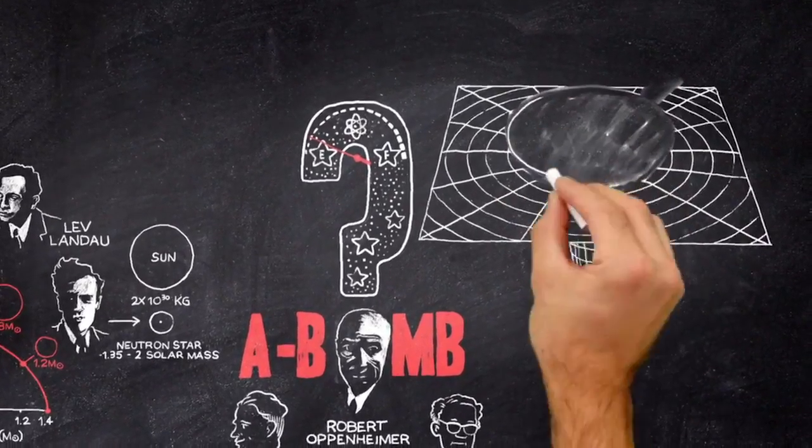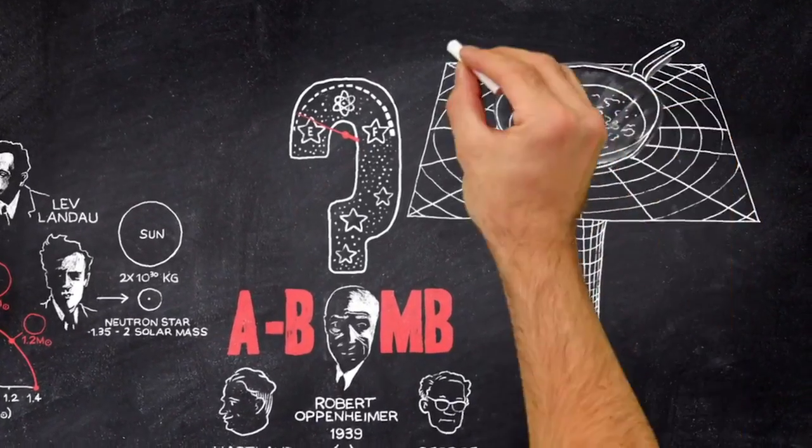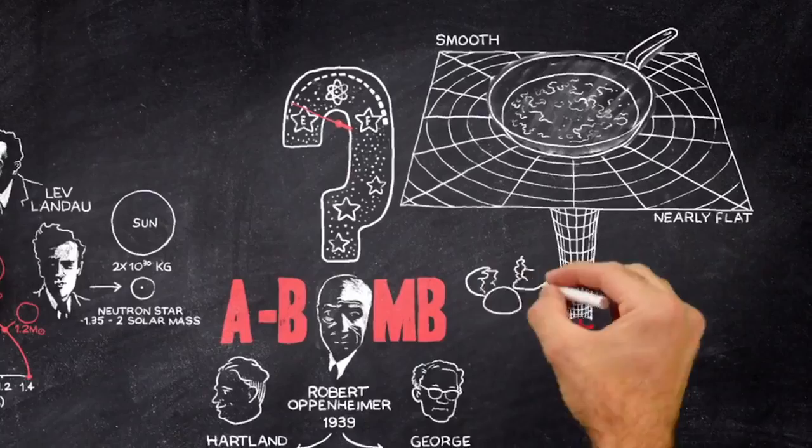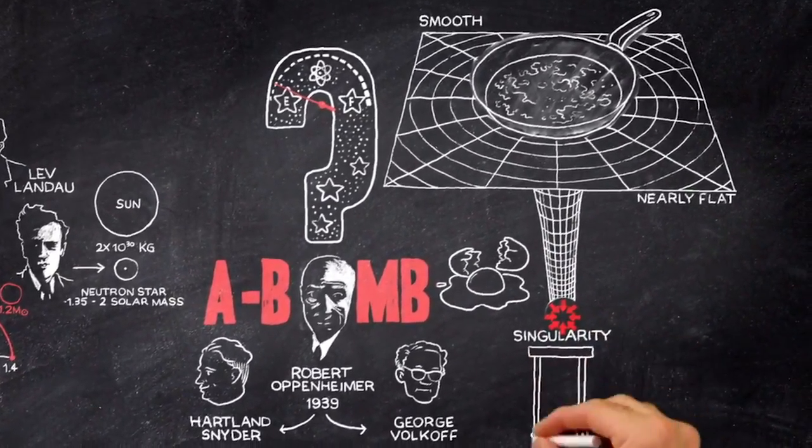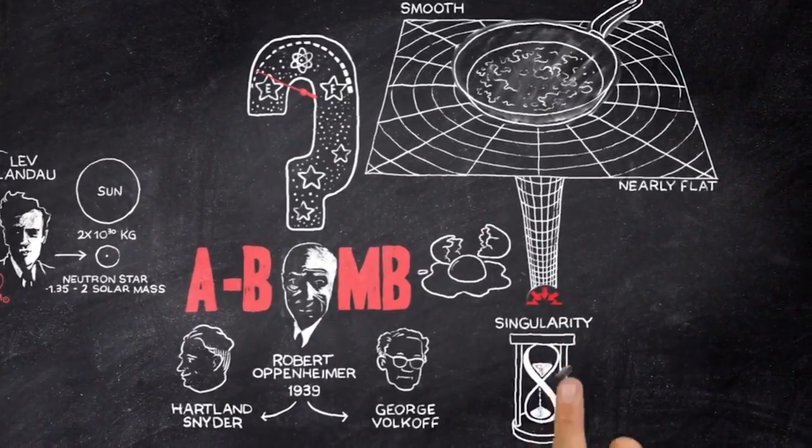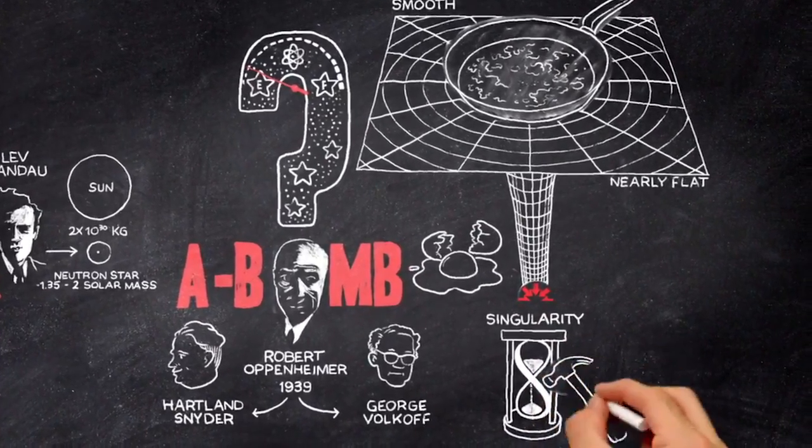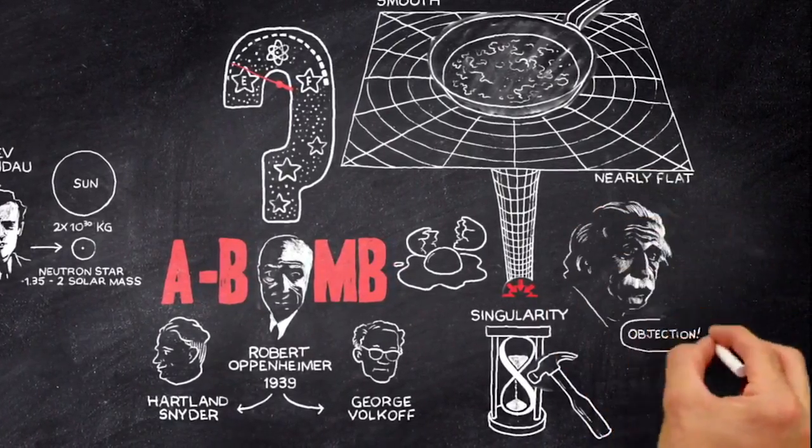Such a point is called a singularity. All our theories of space are formulated on the assumption that space-time is smooth and nearly flat, so they break down at the singularity, where the curvature of space-time is infinite. In fact, it marks the end of time itself. That is what Einstein found so objectionable.